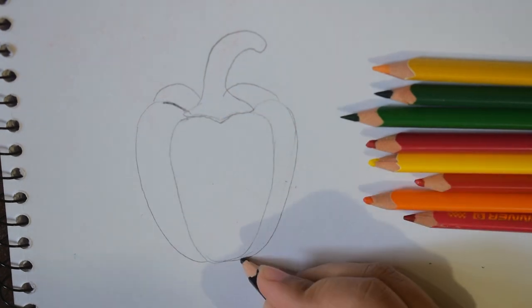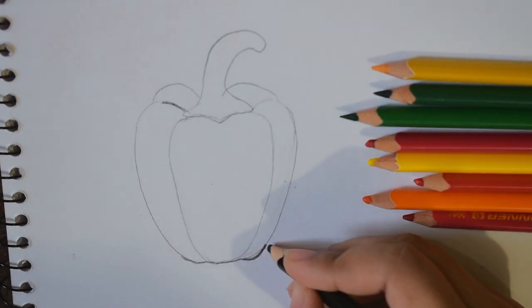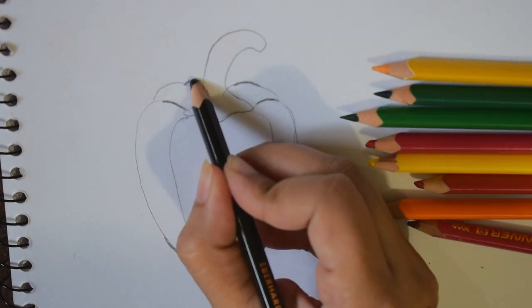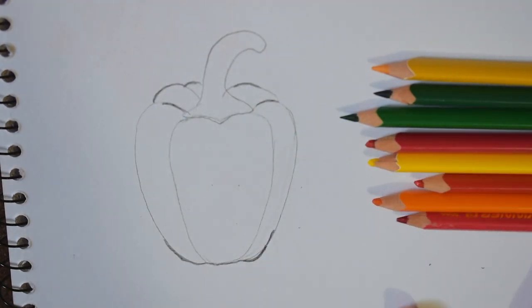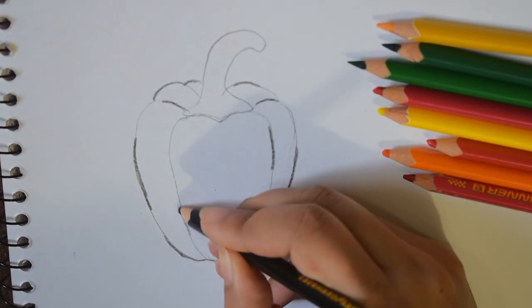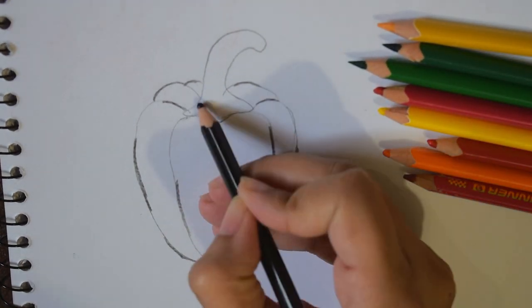When we talk about colors, I'm giving this bell pepper an outline with a black pencil, and next I'm going to be coloring it orange.